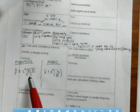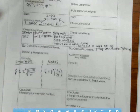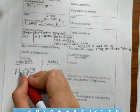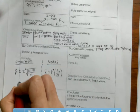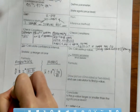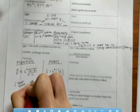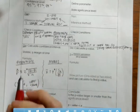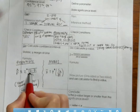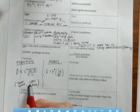Remember, you have a plus and a minus. So when writing your confidence interval, you'll have a lower bound and an upper bound. p-hat minus the margin of error gives your lower bound, and p-hat plus the margin of error gives your upper bound.